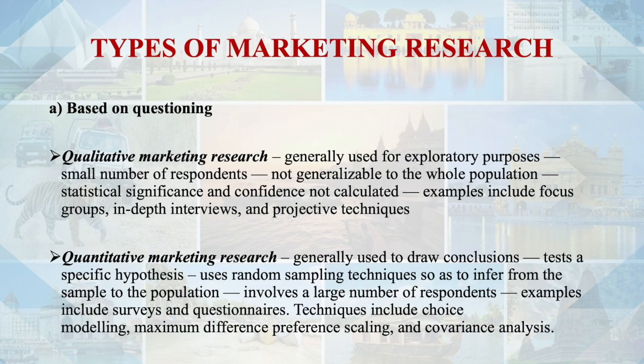Quantitative marketing research is generally used to draw conclusions from a specific hypothesis, using random sampling techniques to infer from the sample to the population. It involves a large number of respondents. Examples include survey and questionnaire techniques, choice modeling, maximum difference preference scaling, and covariance analysis.